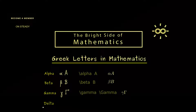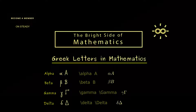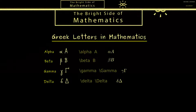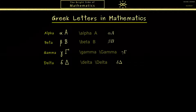The next on the list is delta. This is what you often see in mathematics: the lowercase one looks like this and the capital one looks like this. You might already guess the corresponding LaTeX commands use lowercase d and capital D, and we get a very nice output here.